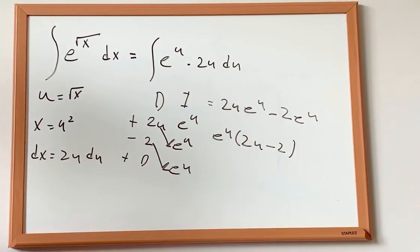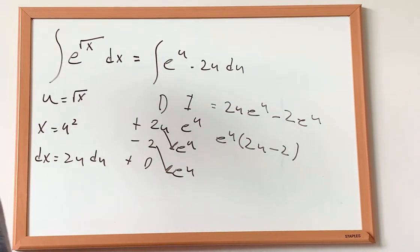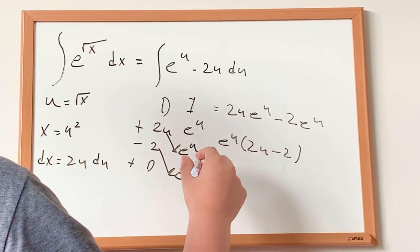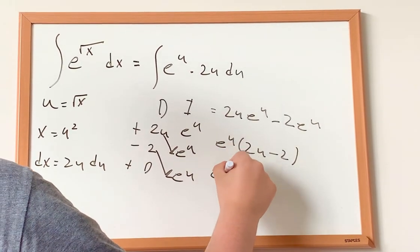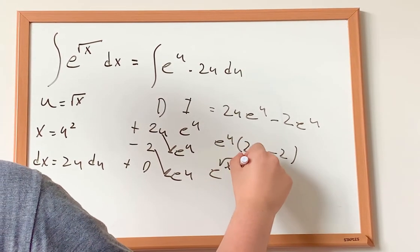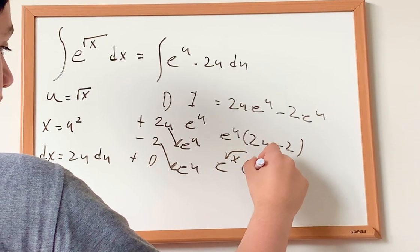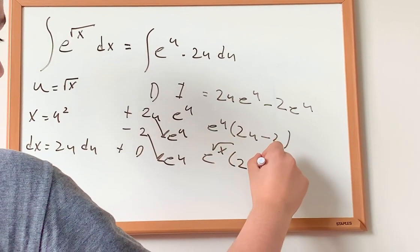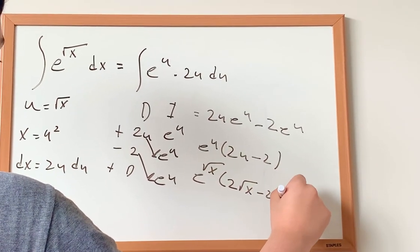And because u is equal to square root of x, we get e to the power of square root of x multiplied by 2 square root of x minus 2 and then plus C at the end.